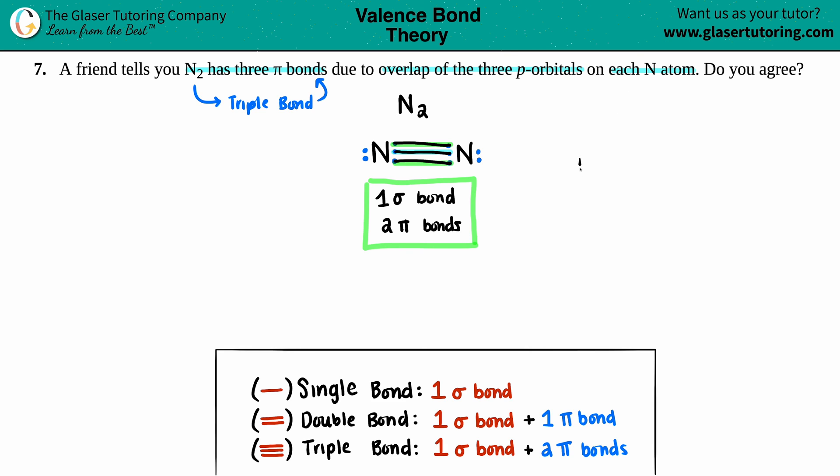No, I have to disagree. Unfortunately I have to disagree because I know that a triple bond has one sigma and two pi, not three pi. And just know that, memorize these, okay?